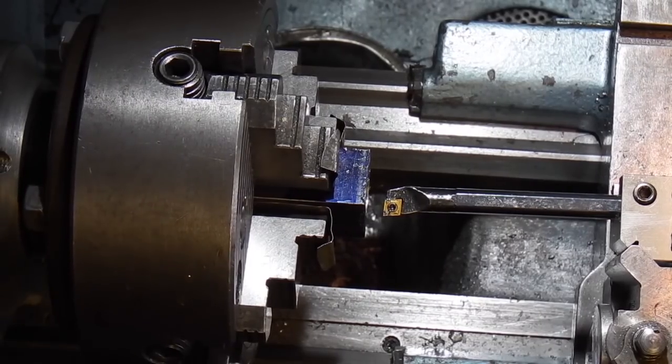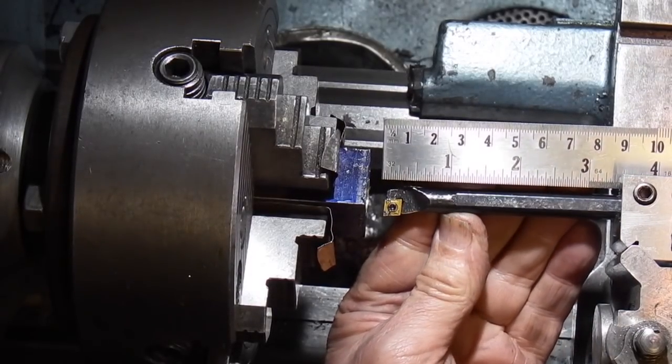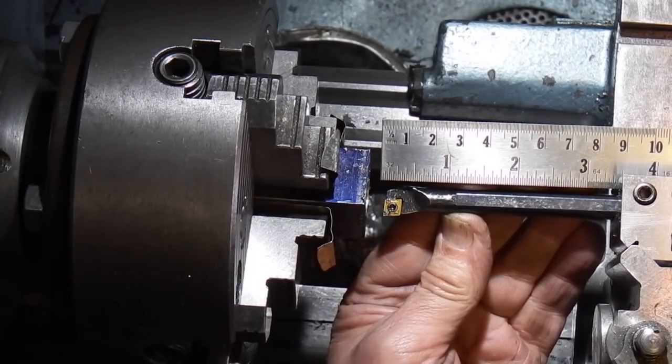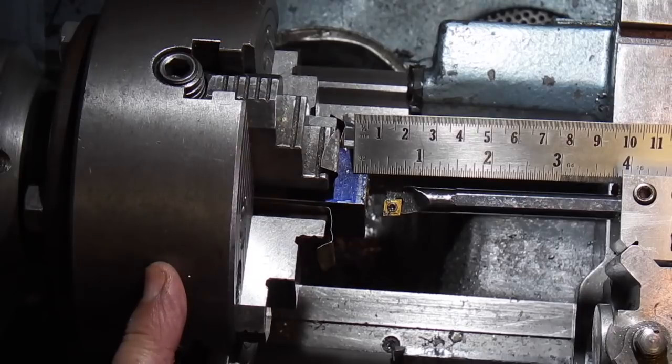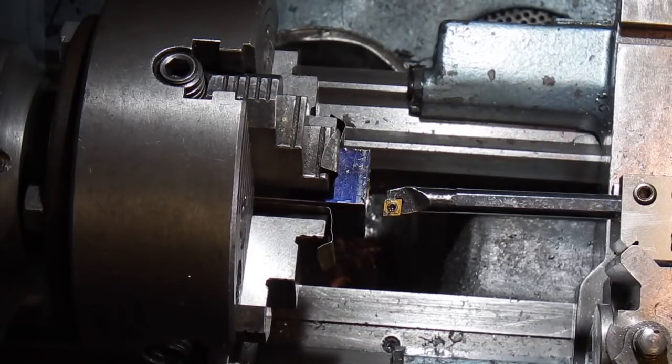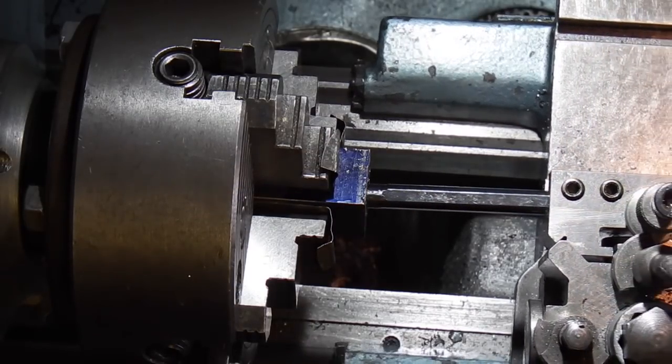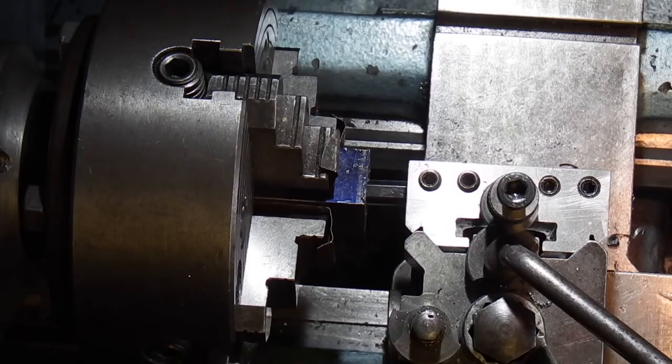I've fitted the boring bar in the lathe and you can see there the overhang of the tool is about 90mm and I need that because this hole I'm doing is 80mm long. So I'm going to put the tool at the back of the bore and then come forward.